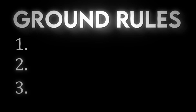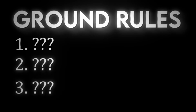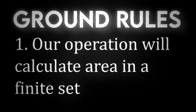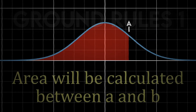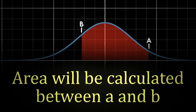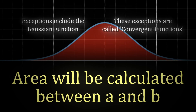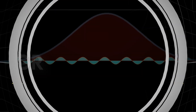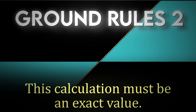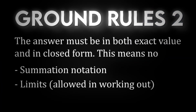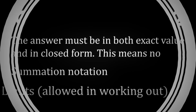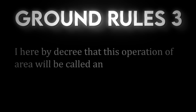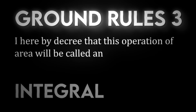Before we get into the specifics, there are a couple of ground rules that we must set. First of all, our desired operation will calculate area in a finite set, meaning it calculates area between a set upper bound and lower bound, rather than the whole function, as this area will often diverge to infinity, which isn't really useful. Second of all, we want to find the true area, rather than a simple approximation, even if this approximation is extremely or sometimes infinitely close. Finally, for the sake of naming, let's call this operation of area an integral.